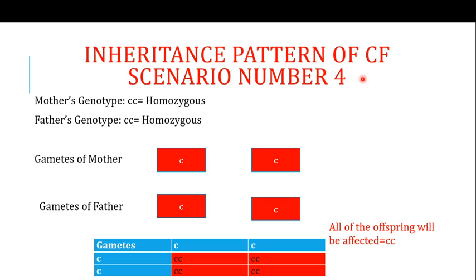In Scenario 4, if both parents are diseased — both carrying two mutated copies — there is no need for lengthy discussion: all of the offspring will be affected.